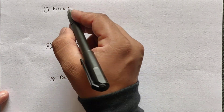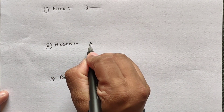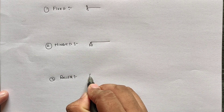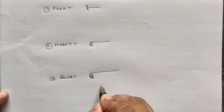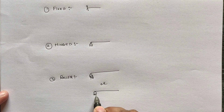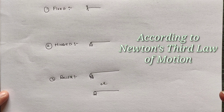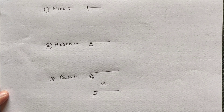The three types of supports are fixed, hinge, and roller. Now, first of all, what is the meaning of reaction? Reaction must be defined from Newton's third law, which states that action and reaction are equal and opposite in nature.